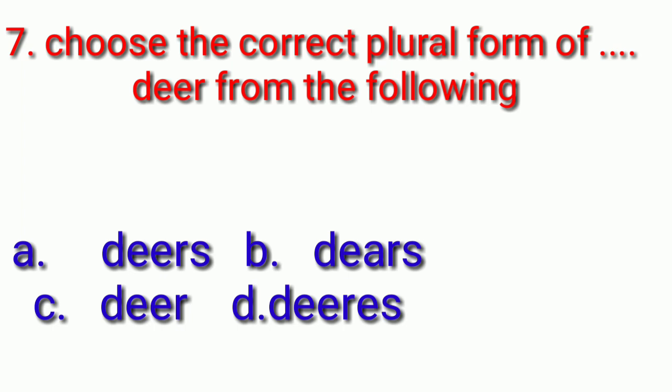Seventh one. Choose the correct plural form of deer from the following. Your underlined word is deer. Your options are deers, deers, deer, deers. Your countdown starts. Answer is deer. For deer, there is no plural form at all. Deer, swine, fish, furniture, luggage, baggage, scenery, advice, news. All these things do not have plural form.